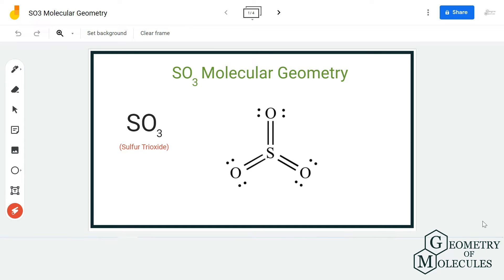Here is the Lewis structure of SO3, in which sulfur is the central atom and it is forming three double bonds with three oxygen atoms. At first sight, this looks like a trigonal planar structure because there are three atoms forming bonds with the central atom.